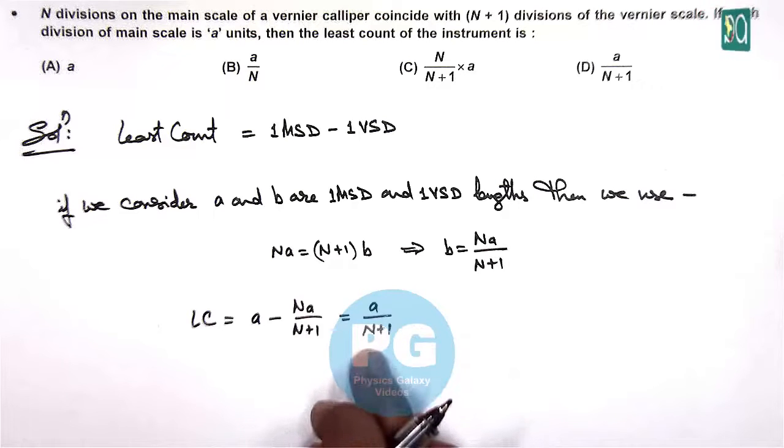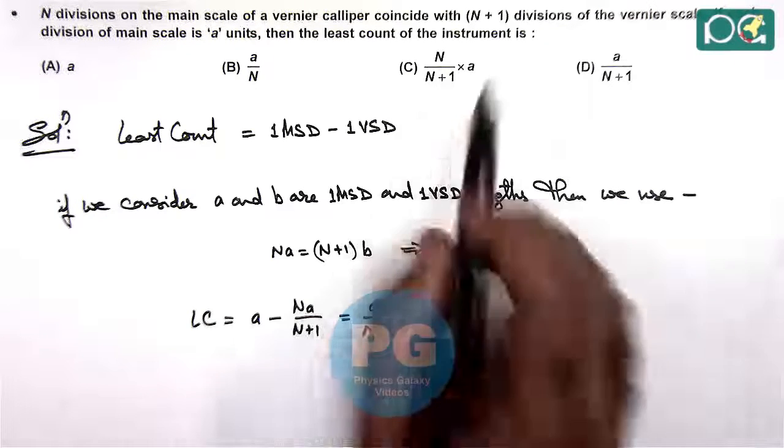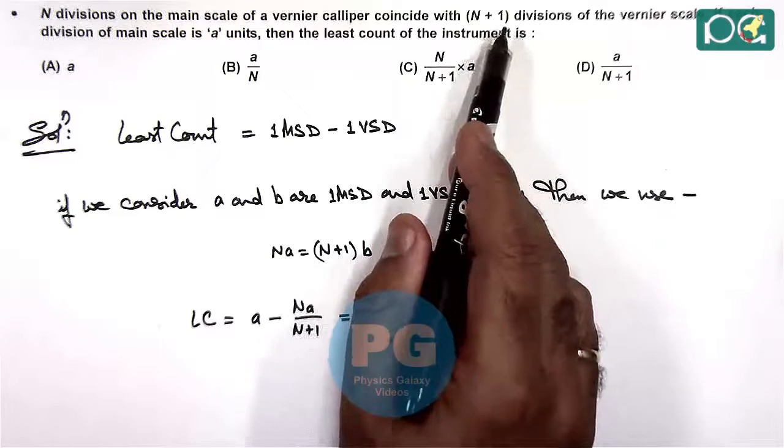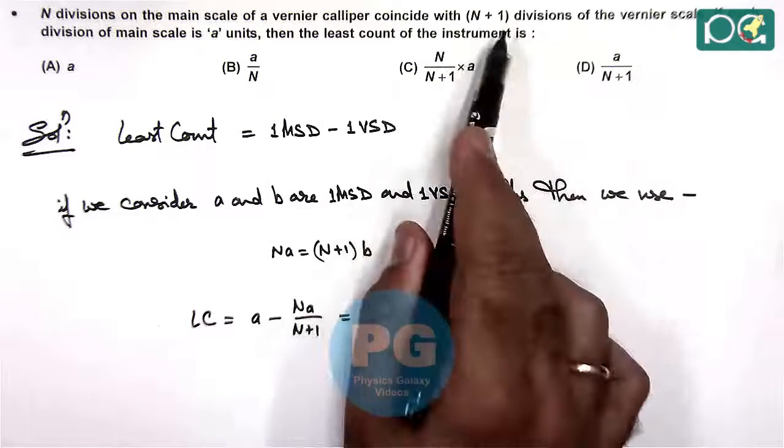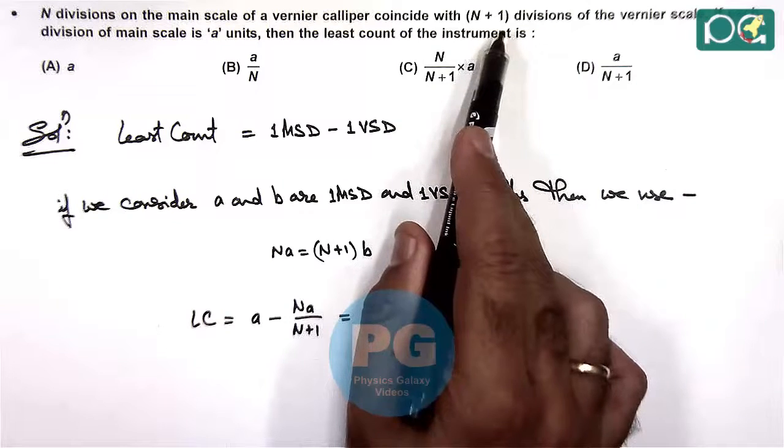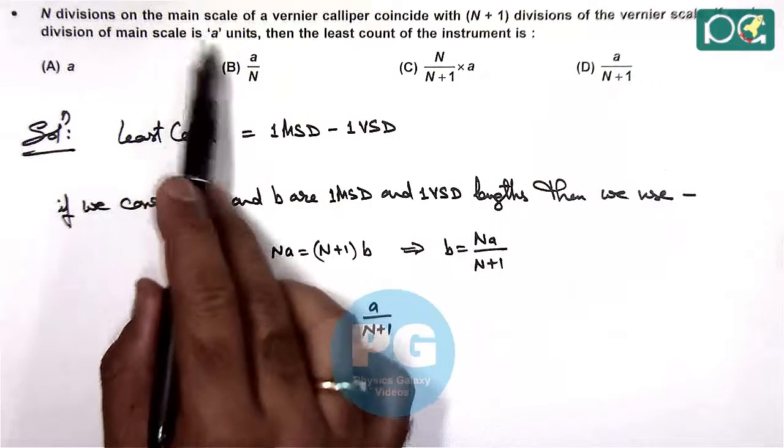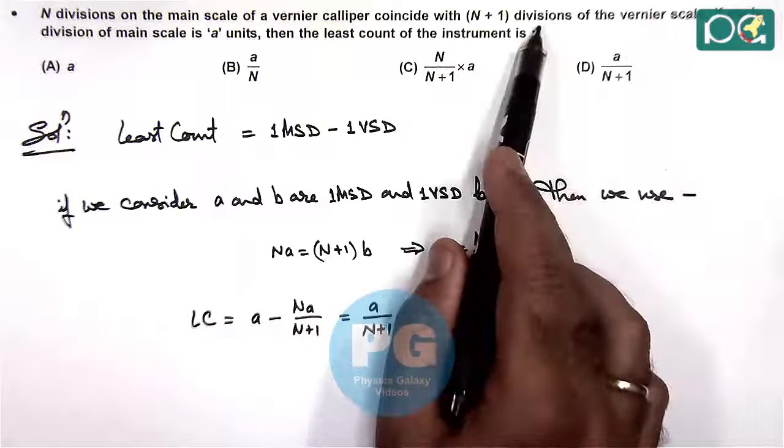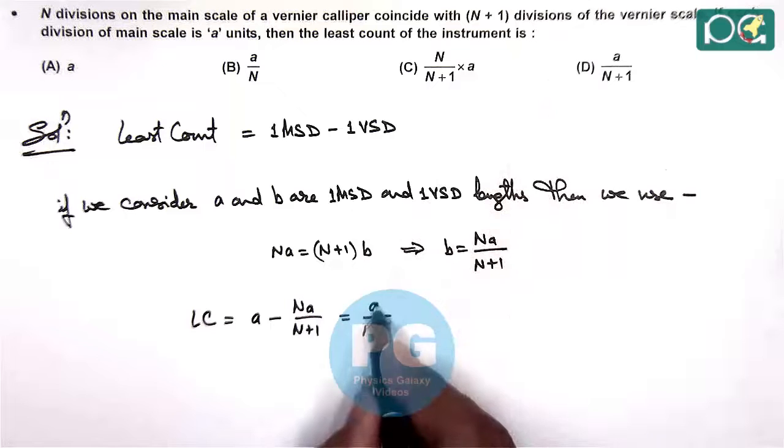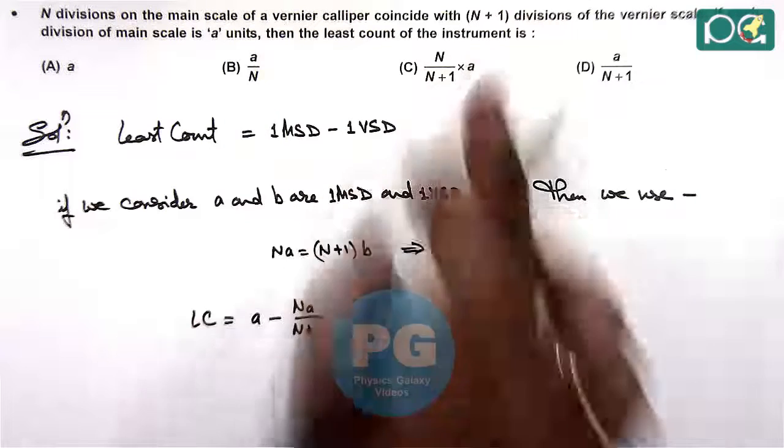This value can also be directly obtained because there is only gap of 1 division in main scale and vernier scale, the number of divisions which are coinciding. That means the main scale length is divided in the number of divisions given on vernier scale. So we can directly calculate this if the difference is of 1 division.